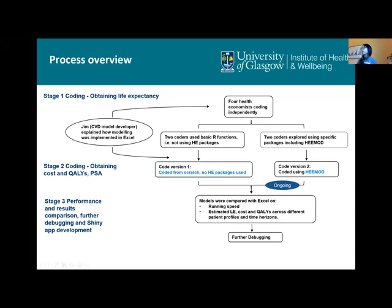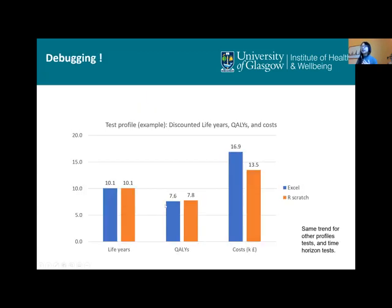For task two — to get cost and quality — the two teams each worked together. Two versions of code were produced: one from scratch not using any specific packages, and the other using heemod. Version one was then compared with Excel on running speed and on outcomes across different patient profiles and time horizons. I also want to mention the debugging aspect of this process.